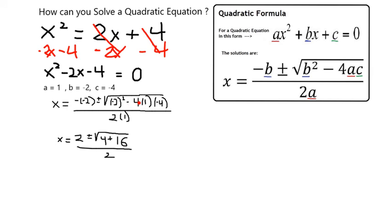And if I do a negative 4 times 1 stays the same times negative 4, makes it a plus 16. So this is going to end up being radical 20.